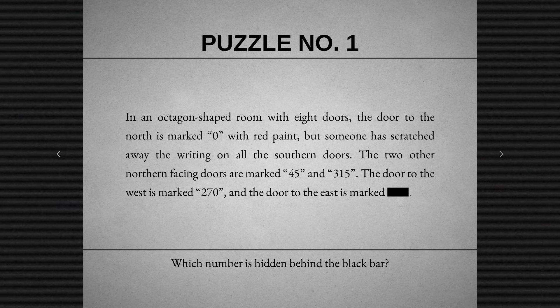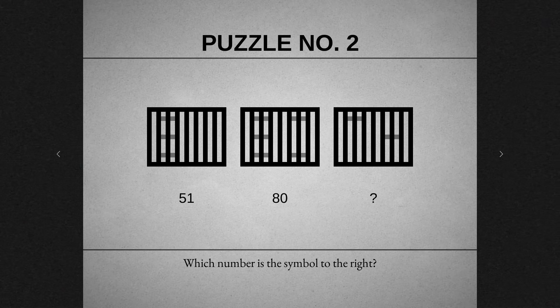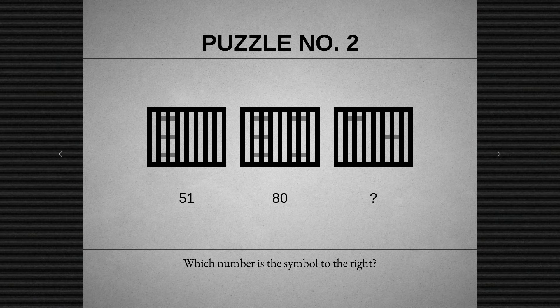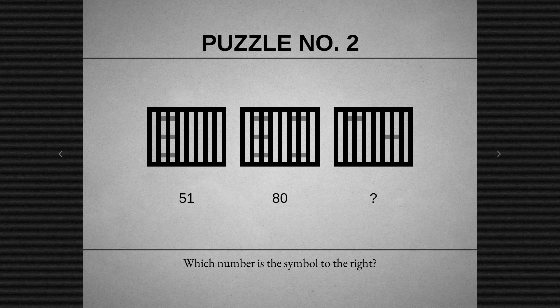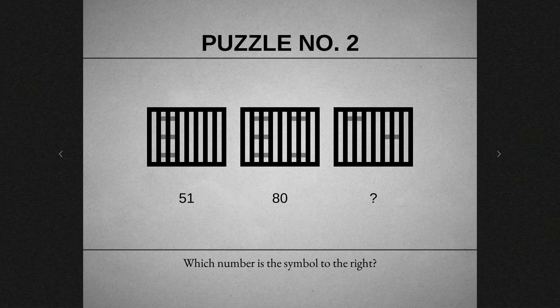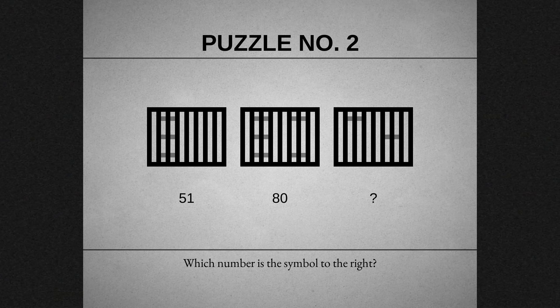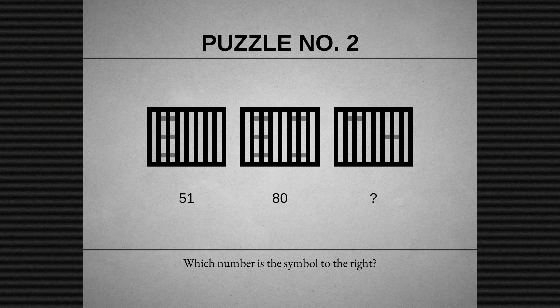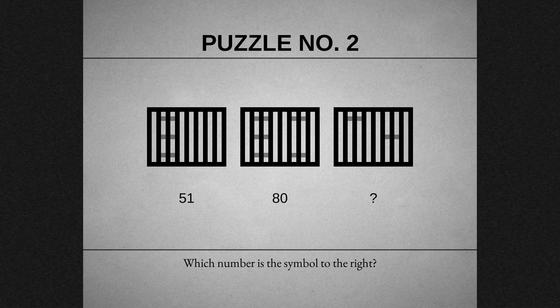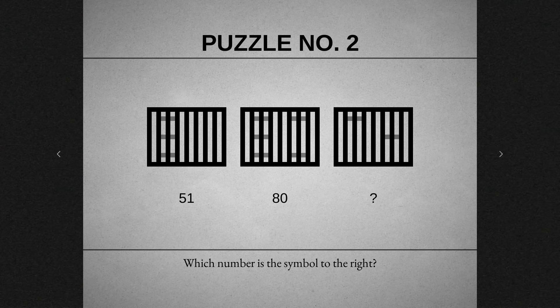We did this one. The answer was 90. Puzzle number two. 5180? What number is the symbol to the right? It's just the number is there, but like as a seven-segment thing, but it's obscured by the black bars in front of it. So the one on the right could be... seven, four? I think so. Not six, because six usually has a bar along the top, although not always. But I think 74.